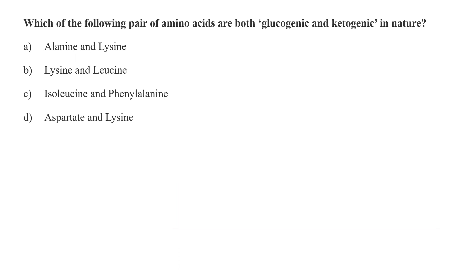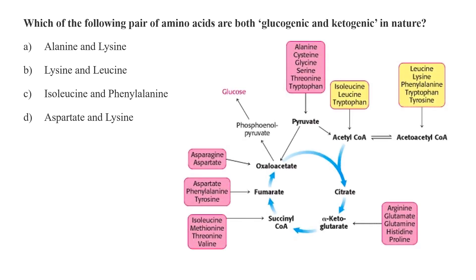Which of the following pair of amino acids are both glucogenic and ketogenic in nature? Is it alanine and lysine, lysine and leucine, isoleucine and phenylalanine, or aspartate and lysine? The amino acids which belong to both glucogenic and ketogenic categories are also called mixogenic amino acids. They can give rise to both glucose and ketone bodies. Generally isoleucine, tryptophan, tyrosine, and phenylalanine belong to this category. Lysine and leucine are pure ketogenic amino acids, while rest are pure glucogenic. So here the answer C would be correct, that isoleucine and phenylalanine are both glucogenic and ketogenic in nature.